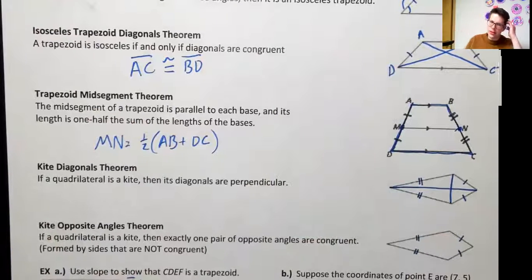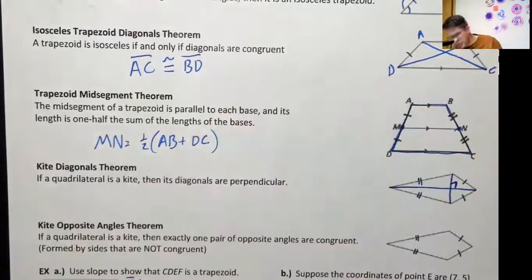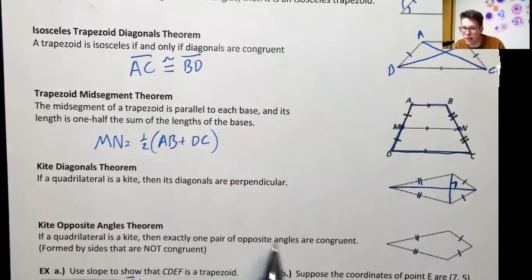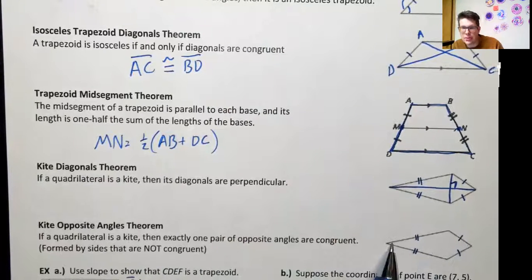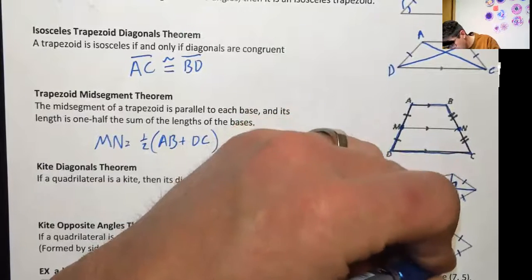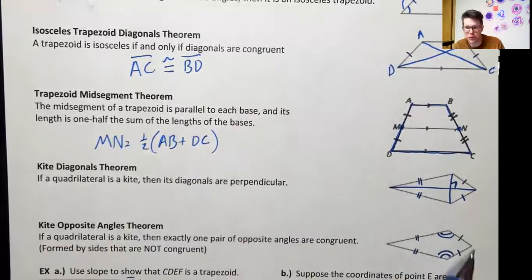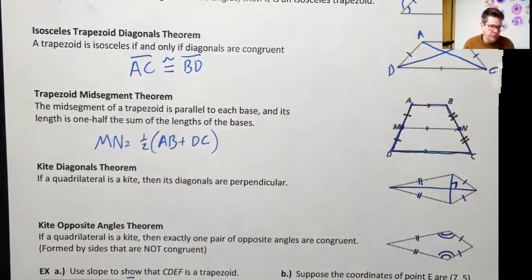For kites, we have the kite diagonals theorem, which states the same thing we saw with a rhombus: the diagonals are perpendicular, so we can mark a 90-degree angle there. We also have the kite opposite angles theorem: if a quadrilateral is a kite, then exactly one pair of opposite angles is congruent — just one. The angles that match are the ones formed by the non-congruent sides, where one long side and one short side meet.